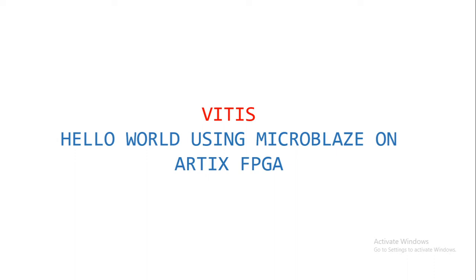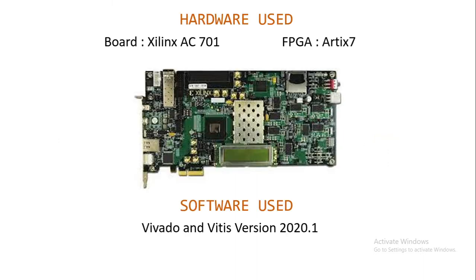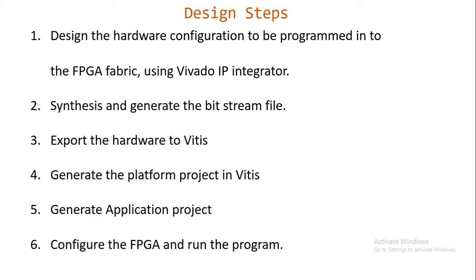In this demonstration, I will be showing you how to run a simple hello world program on a MicroBlaze processor using Xilinx Vitis IDE. The hardware I'm going to use is the Xilinx evaluation board AC701, which contains an Artix-7 FPGA. The software used is Vivado and Vitis version 2020.1. The design flow involves designing hardware in Vivado, synthesizing and generating the bitstream, exporting to Vitis, creating the platform and application project, and downloading the program onto the FPGA.